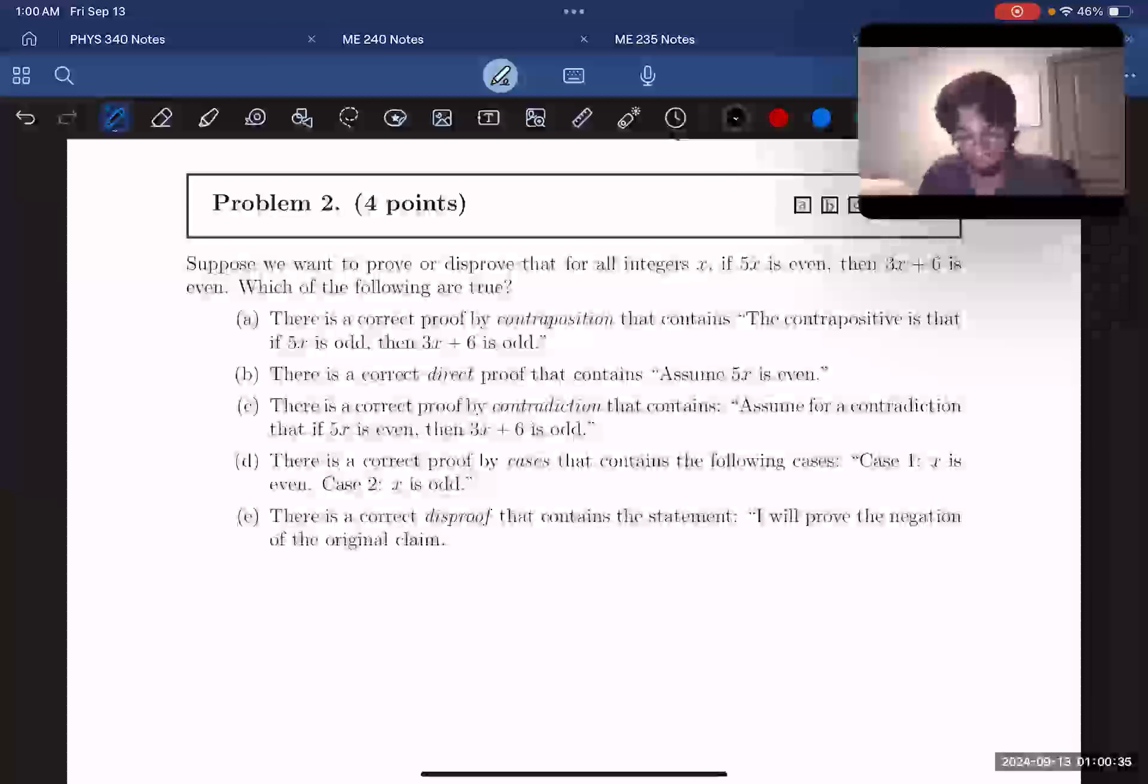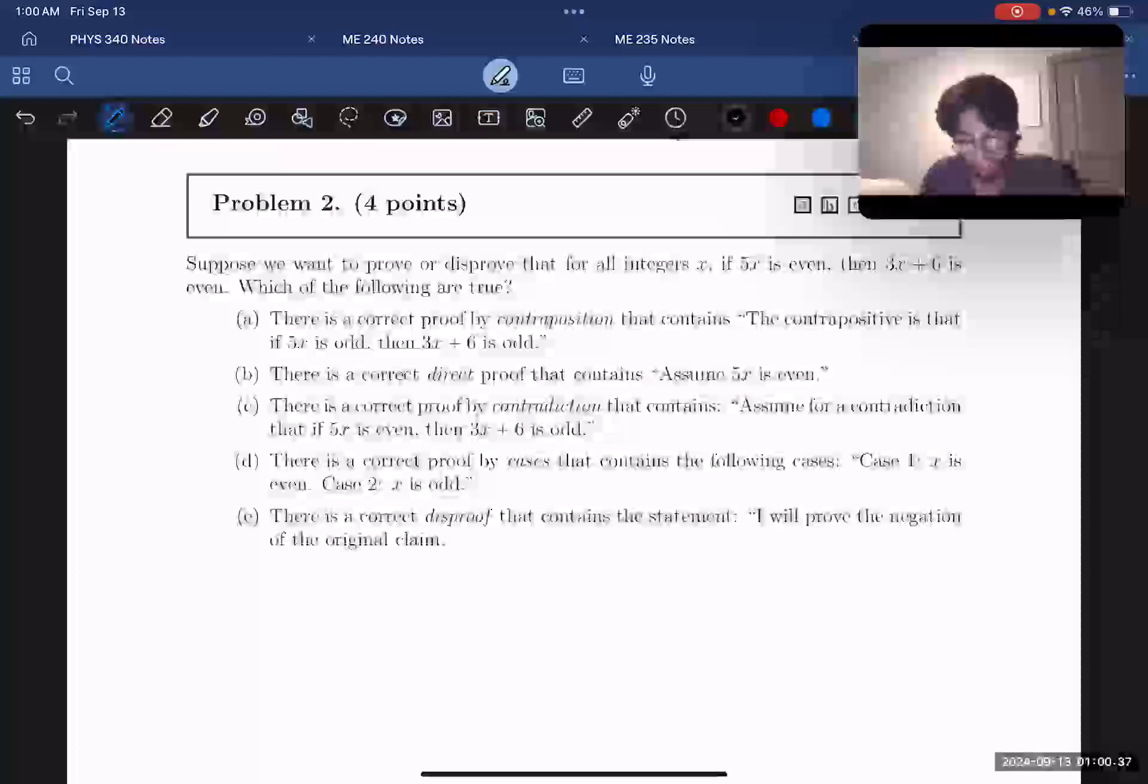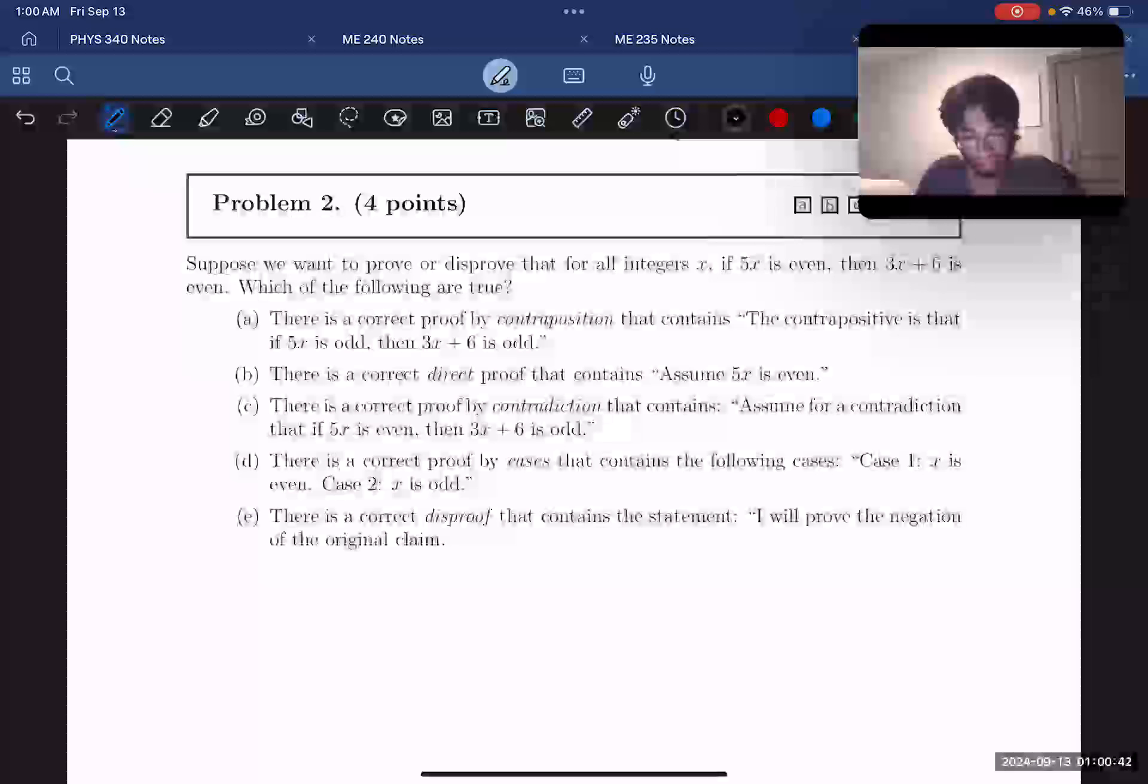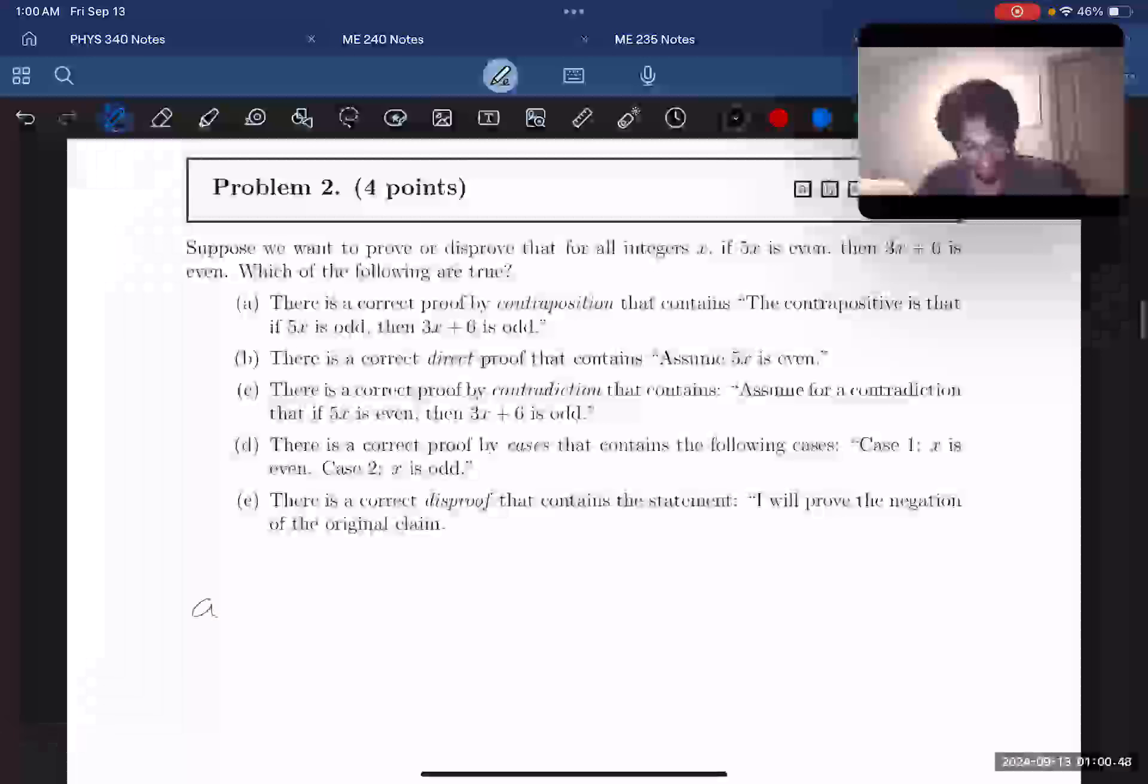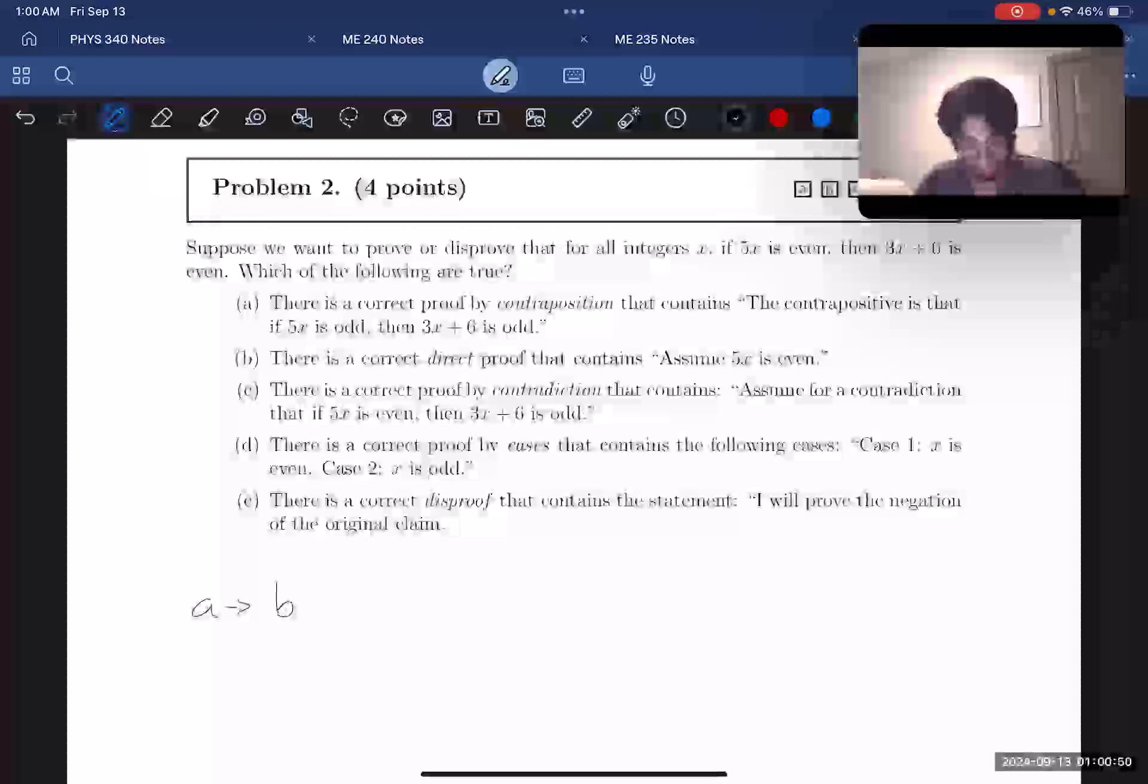Let's look at A. There's a correct proof by contraposition that contains the contrapositive is that if 5x is odd, then 3x plus 6 is odd. Let's first think about what our definition for the contrapositive is. If we have a statement A implies B, then the contrapositive would be swapping both sides of the if-then statement and negating them. So it would be not B implies not A.